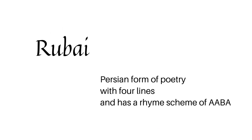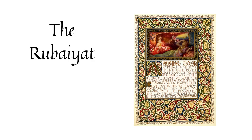The word Rubai refers to an original Persian form of poetry with four lines and has a rhyme scheme of a-a-b-a. This means that the first, second, and fourth lines end in a rhyme. The plural of Rubai is Rubaiyat.